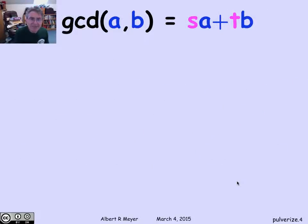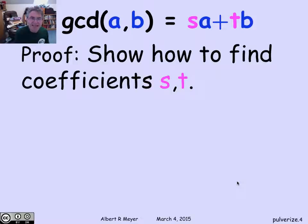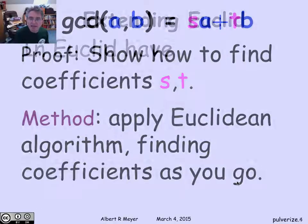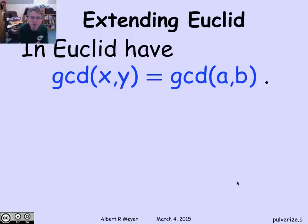How do we get S and T? The basic idea is that we're going to find these coefficients by applying the Euclidean algorithm. As we go, we're going to be calculating coefficients. The Euclidean algorithm starts off with A and B, and then it has two registers x and y that it keeps updating. The invariant is that the GCD of x and y stays the same as always the GCD of A and B.